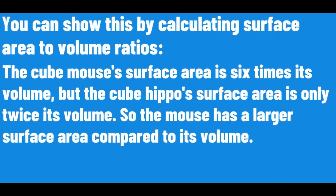The cube mouse's surface area is 6 times its volume, but the cube HEPA's surface area is only twice its volume. So the mouse has a larger surface area compared to its volume.